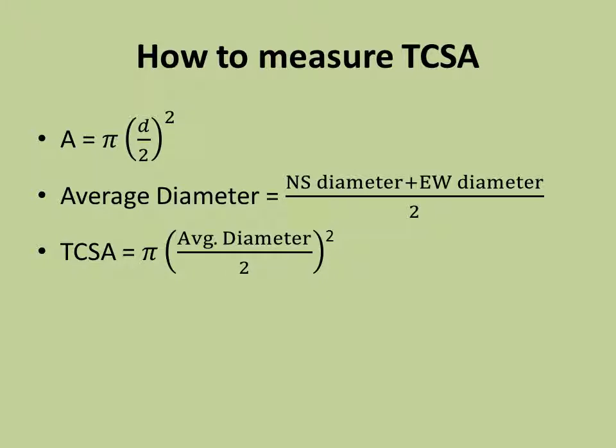We use the formula to find the area of a circle and average the two diameters we measured to find an average diameter. We then plug that in to find the trunk cross-sectional area for that tree.